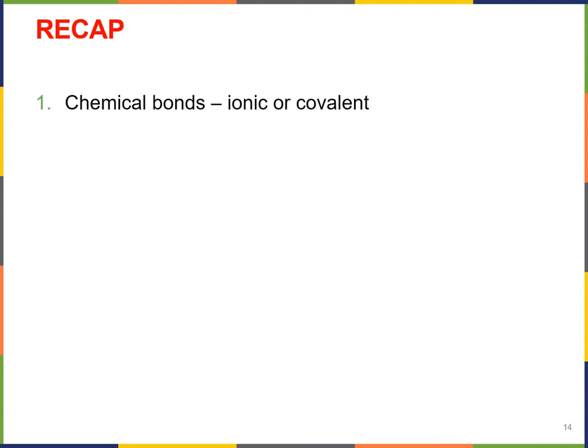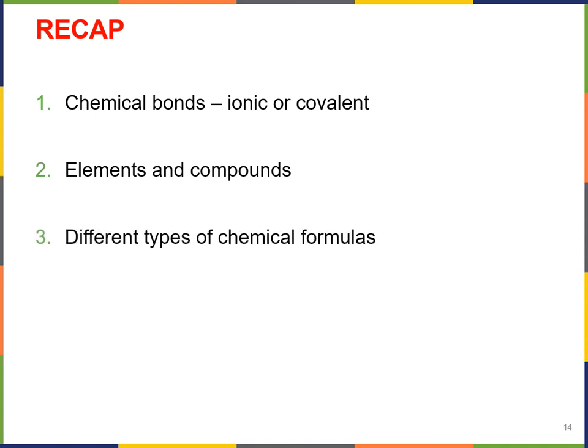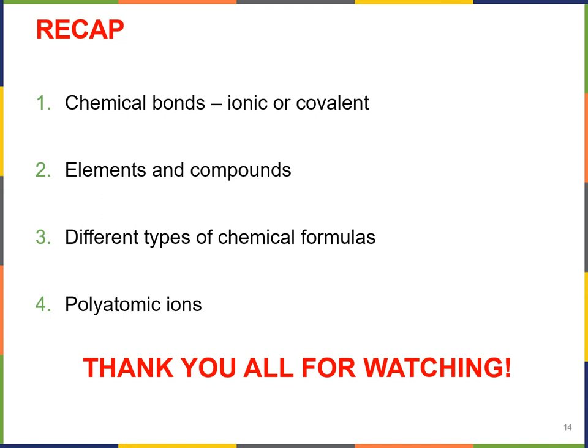To review what we covered in this lecture: we covered chemical bonds — ionic and covalent bonds. We covered information about elements and compounds and how they relate to molecules and atoms. We looked at different types of chemical formulas, and we learned about polyatomic ions. We hope you enjoyed this video, and thank you all for watching.